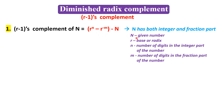Here, N is the given number and it should have both the integer and the fraction part. R is the base or radix, n is the number of digits in the integer part of the number, and m is the number of digits in the fraction part of the number. If the number has both the integer and fraction part, we use this formula.